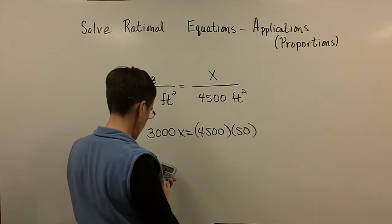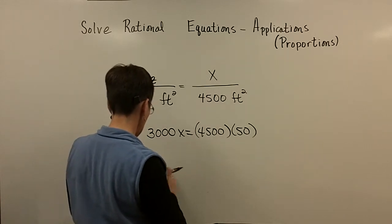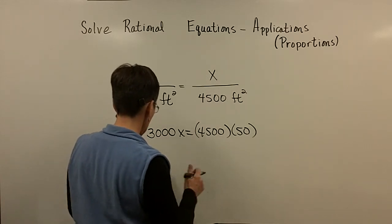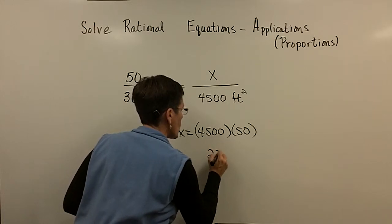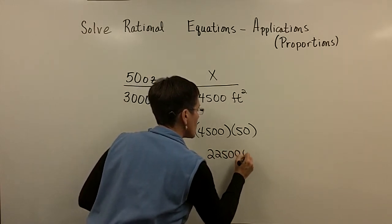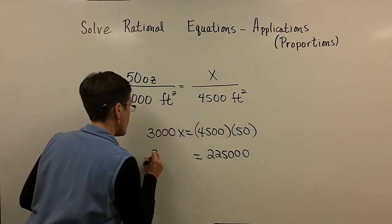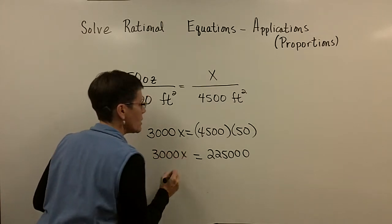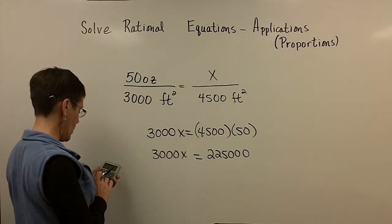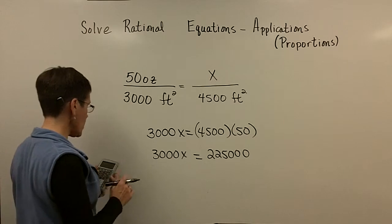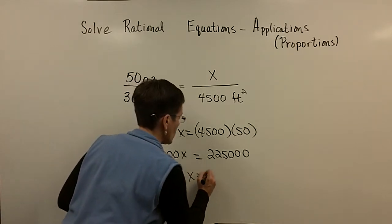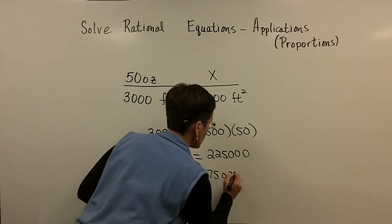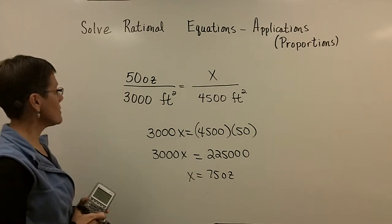Let's see, 4,500 times 50. I'm just going to do just so I don't make a mistake in my head. So that's 225 with three zeros. And then I'm going to divide by 3,000. So the 225 divided by 3, actually, is I'm going to need 75 ounces of grass seed.